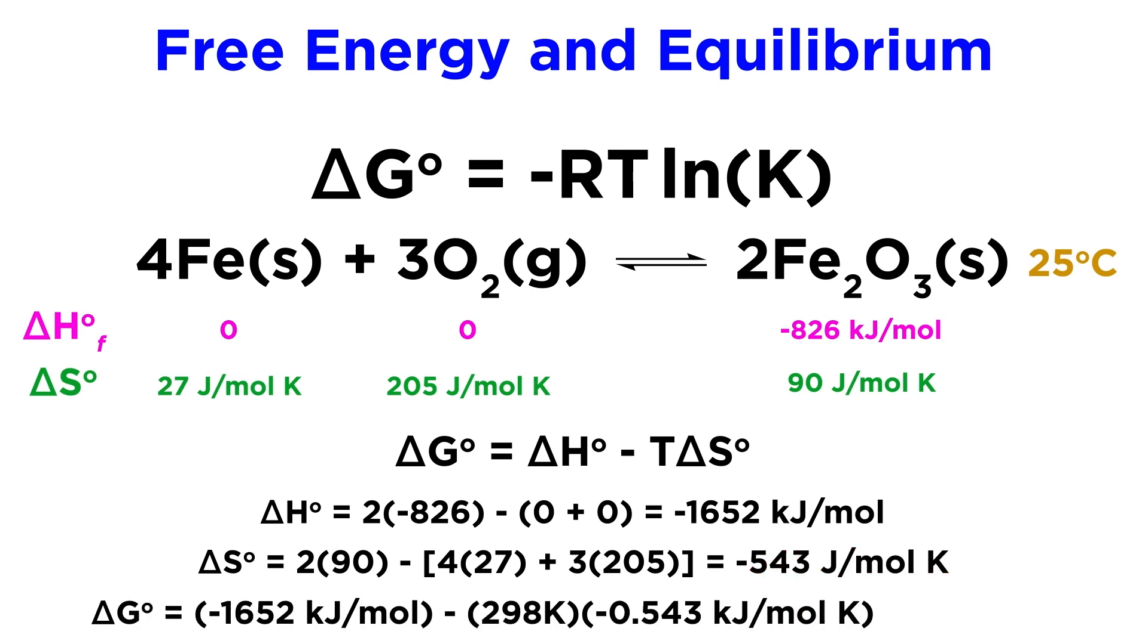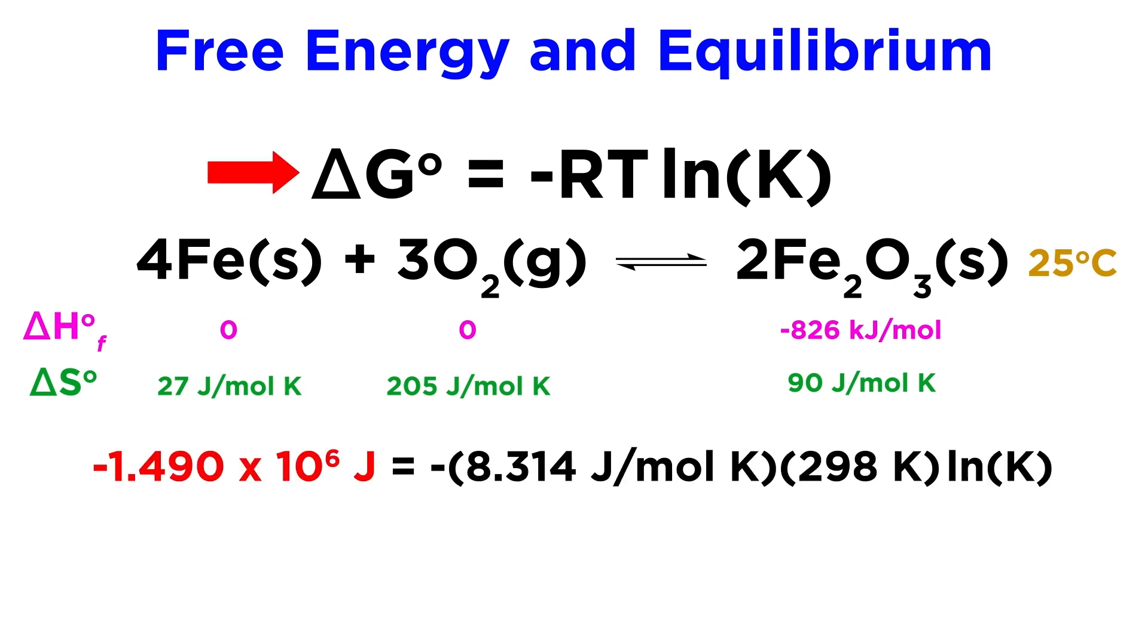Then let's plug in our newly calculated delta H and delta S values in this other equation, along with 298 Kelvin for temperature, making sure that our units for energy agree. We should get negative 1490 kilojoules. Then we can plug that into our equation relating delta G and K, along with R and T. Divide both sides by RT, and we get the natural log of K as being 601.